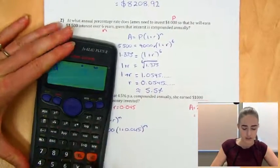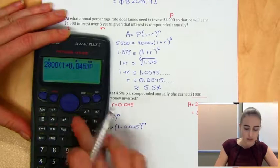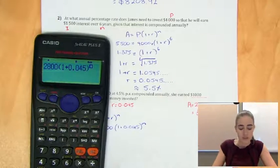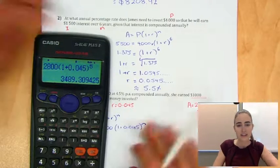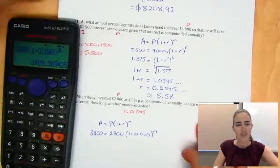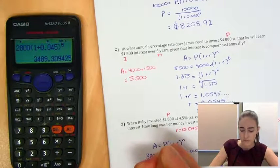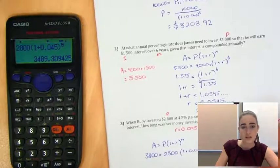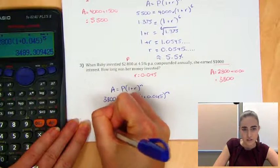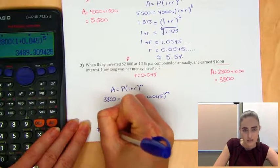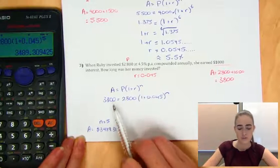So we're going to have 2,800 outside of 1 plus 0.045 to the power of, and we're going to pick something. So let's go 5. Doesn't matter where you start, let's pick something. If we pick 5, we'd end up with $3,489. So that's actually pretty close. So if we had, I'm just going to write this down so I remember it. If we had n equals 5, then we would end up, right, we'd end up with $3,489.31. So that's if n equals 5, that's what we get, and this is what we're aiming for.